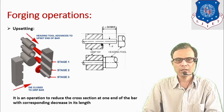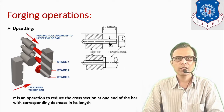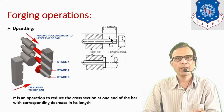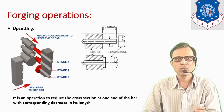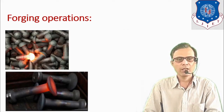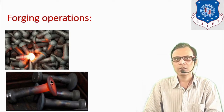Regarding dimensions, if we consider the diameter D of the bar, the maximum length required for upsetting is L equal to 3D. That much length is required to produce a head on the bar. Some examples show how rivets or bolt heads can be produced using this process.